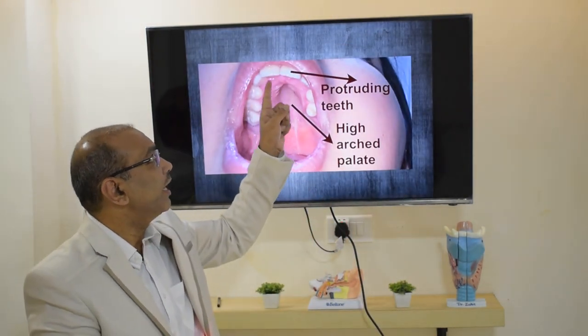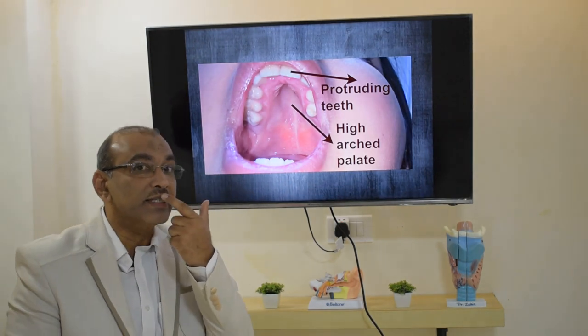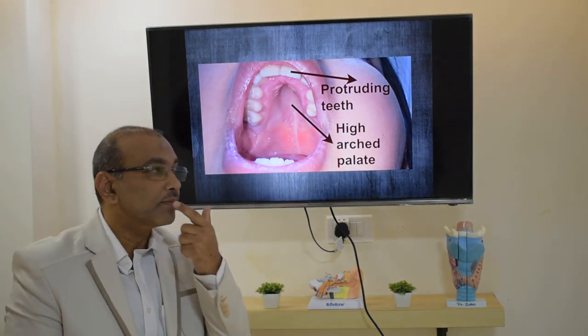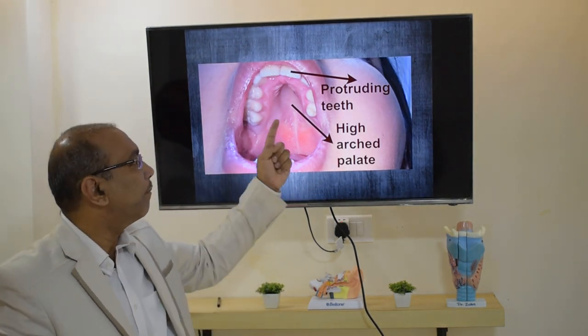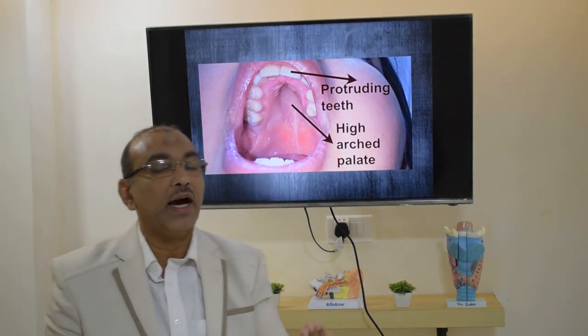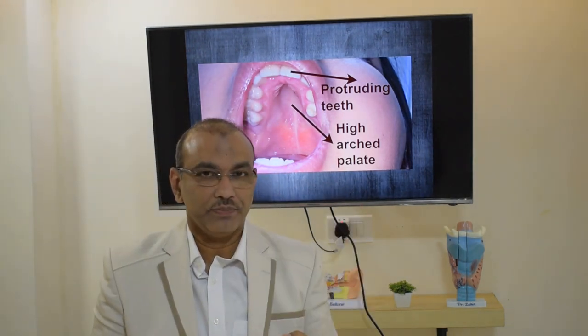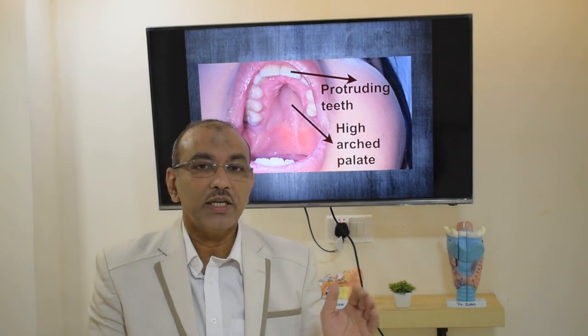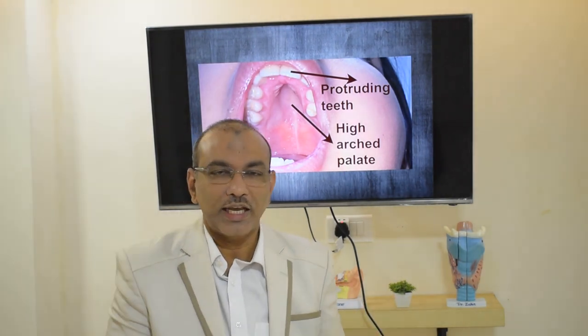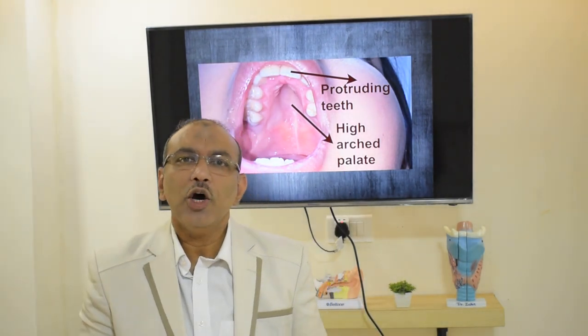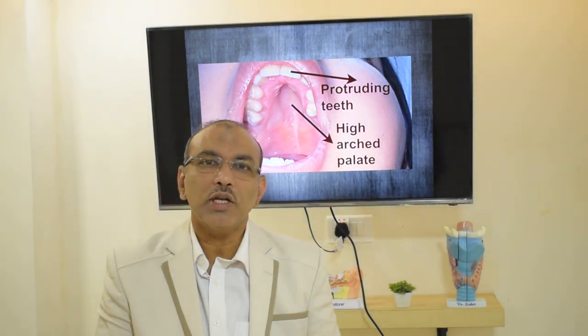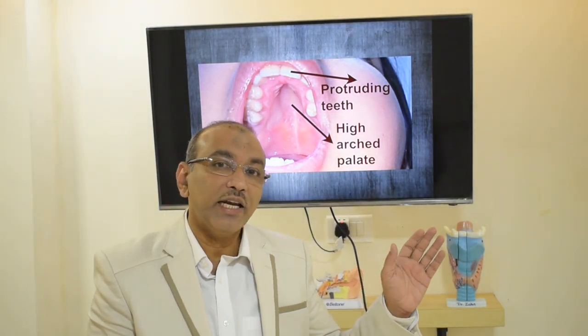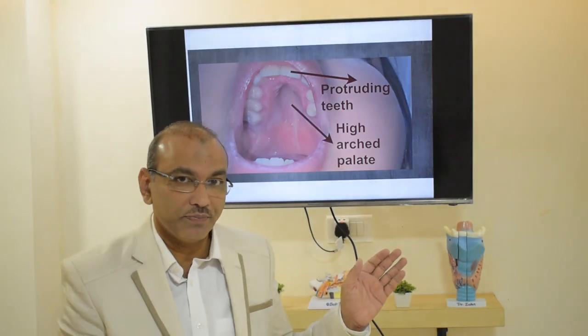Additional oral findings include protruding upper incisors and a high-arched palate. These are the findings in the oral cavity. Now let us see the secondary effects in the ear.